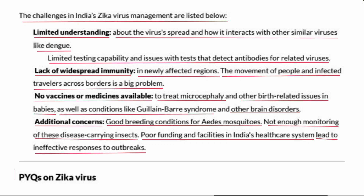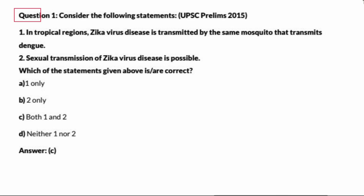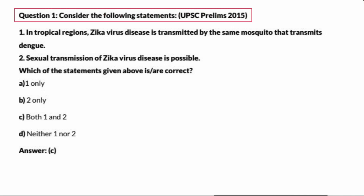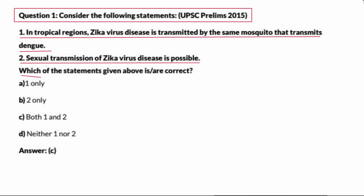PYQ on Zika virus — asked in 2015 UPSC Prelims: Consider the following statements. Statement 1: In tropical regions, Zika virus disease is transmitted by the same mosquito that transmits dengue. Statement 2: Sexual transmission of Zika virus disease is possible. Which of the statements given above is or are correct? Option A: One only. Option B: Two only. Option C: Both One and Two. Option D: Neither One nor Two. Give your answer in the comment box.